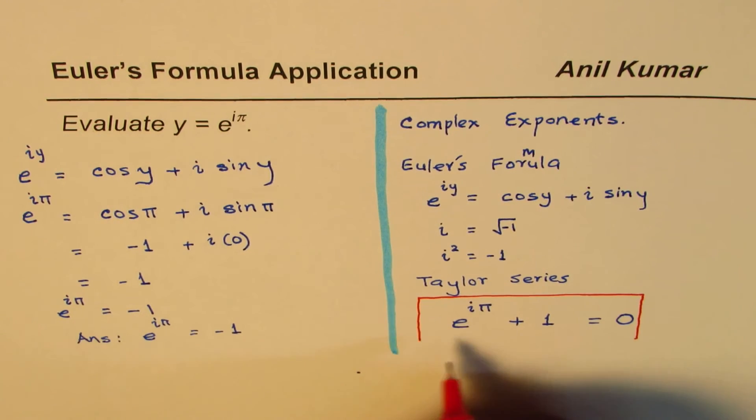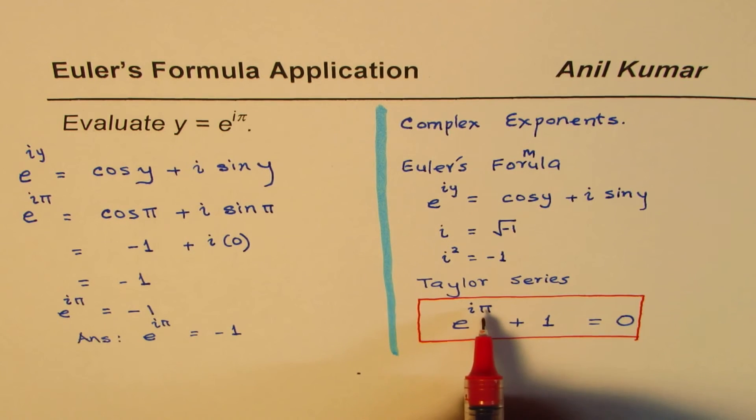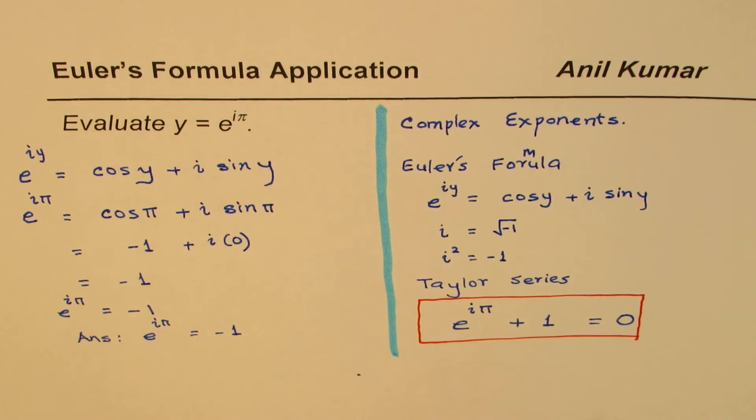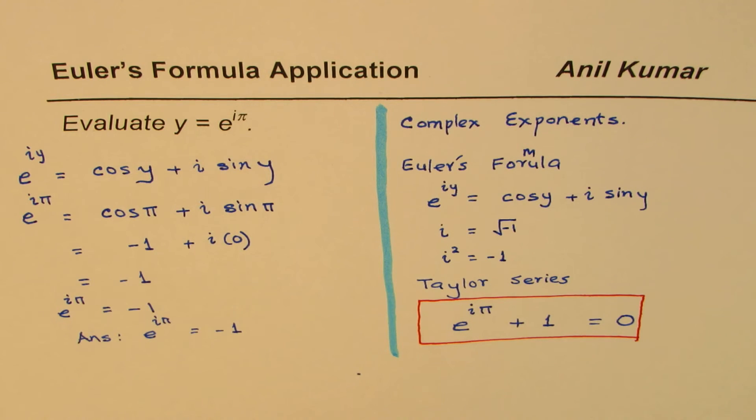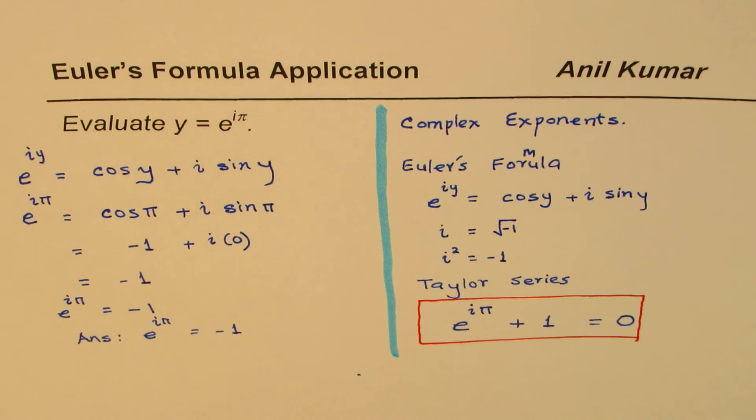Do you see that? The base e, i pi, 1 and 0. Now, they play a huge role in mathematics. And we have all of them connected with this particular solution. So that's why it has a huge significance in mathematics.